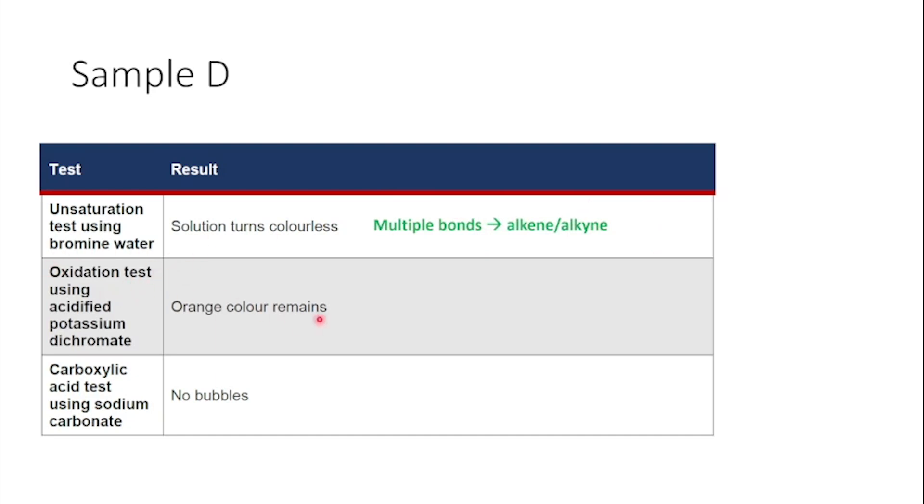When we do the oxidation test, the orange colour remains. So we don't see a reaction, which means we have no oxidation, which means we don't have any primary or secondary alcohols or any aldehyde functional groups in our molecule.